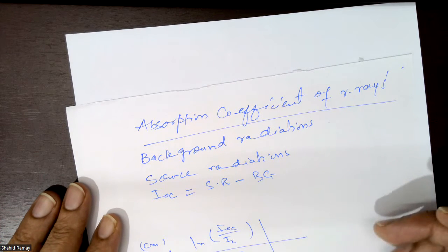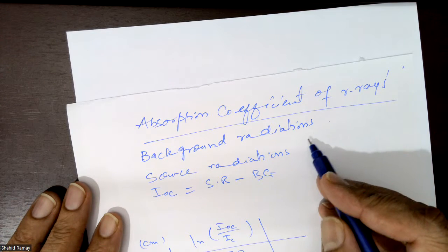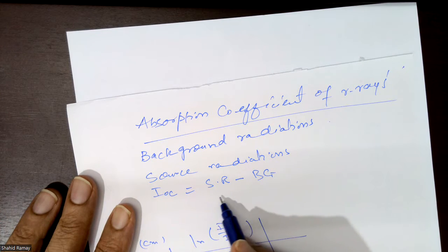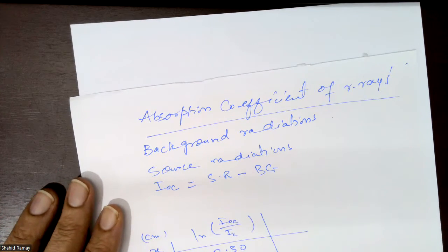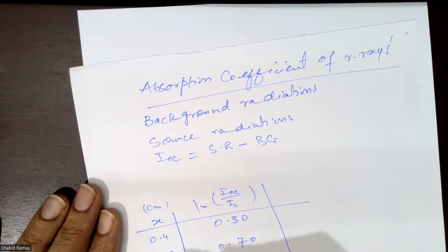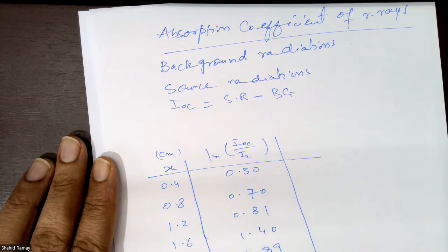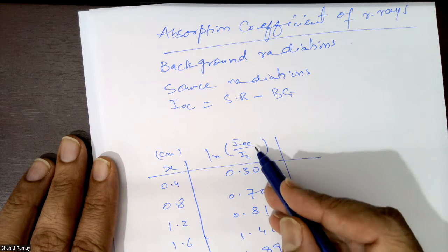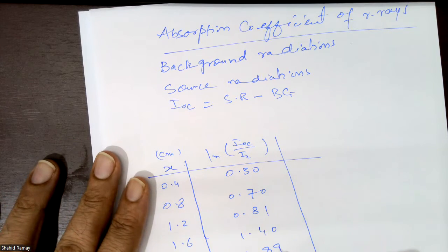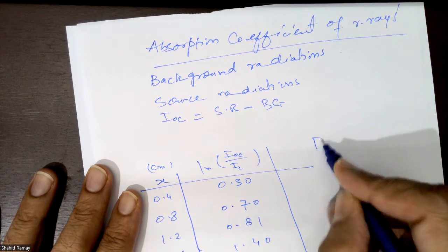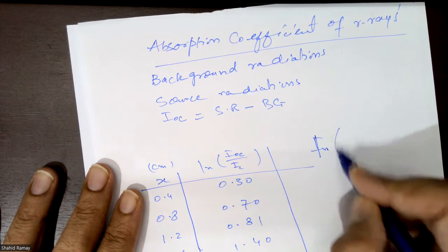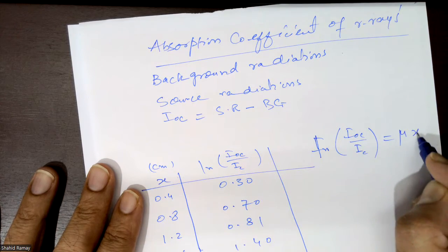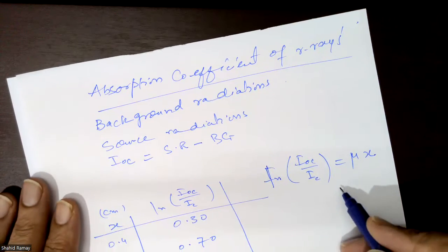In this experiment, you first measure the background radiations, then the source radiations, then you measure the Ioc value, which is the source radiation minus the background radiations. After that, you change the thickness of the lead sheets, measure the data, and apply the formula: ln(Ioc / Ic), which equals mu times x, where mu is called the absorption coefficient.